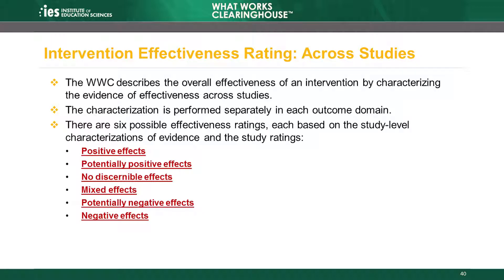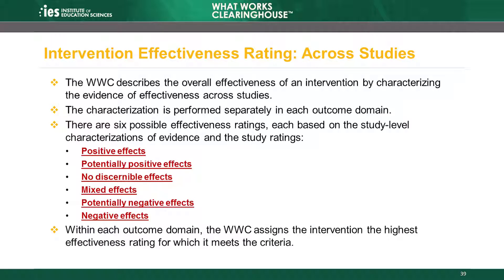There are six possible characterizations an intervention can receive: positive effects, potentially positive effects, no discernible effects, mixed effects, potentially negative effects, and negative effects. It is possible for an intervention to meet the criteria for multiple characterizations. The WWC assigns the intervention the highest effectiveness rating for which it is eligible.